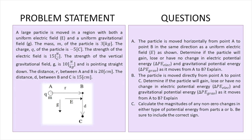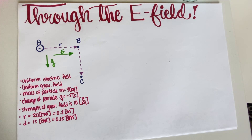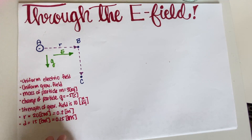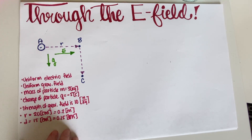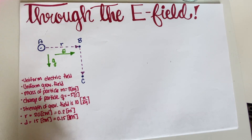The first thing we have to solve is: the particle is moved from A to B in the same direction as the uniform electric field. We need to determine if the particle will gain, lose, or have no change in electric potential energy and gravitational potential energy as it moves from A to B. The particle has a mass, so it's affected by gravity, and it has a charge, so it's affected by the electric field.